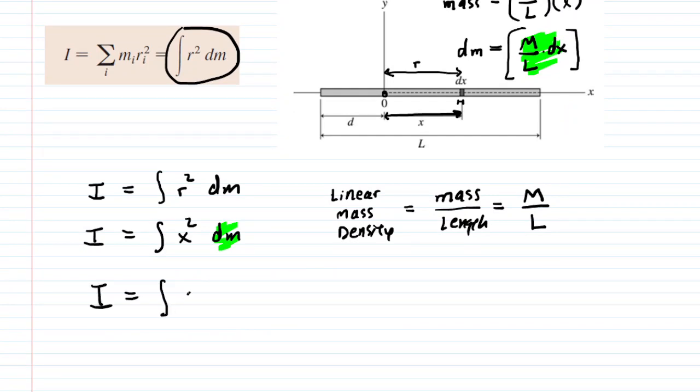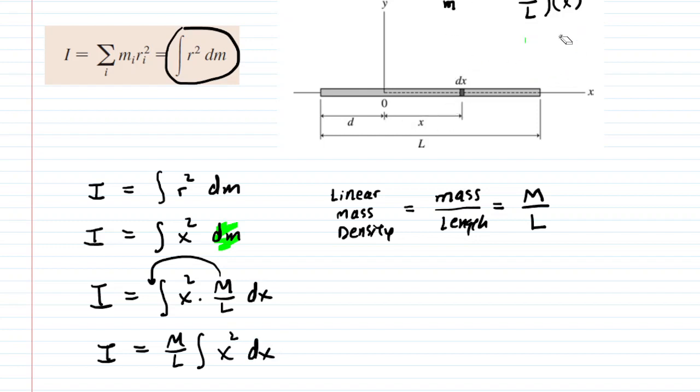We're going to be taking a substitution. So this value right here is going to be plugged in for dm. And that's going to create a nice integral where our variable is strictly in terms of x. So we have the integral of x squared multiplied by our dm, which is m over l dx. M over l is a constant because the mass of the rod and the length of the rod is constant. So we can actually factor it out, leaving us with a simple integral of x squared dx.